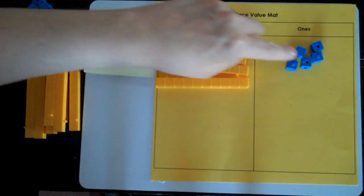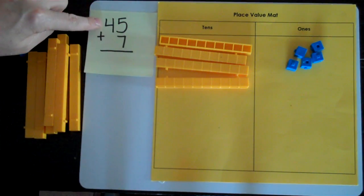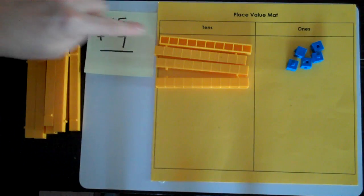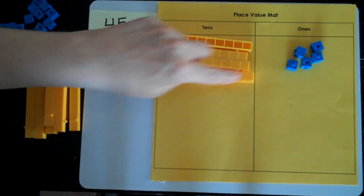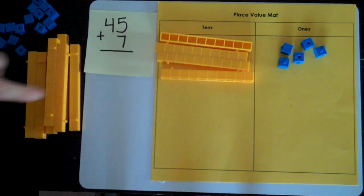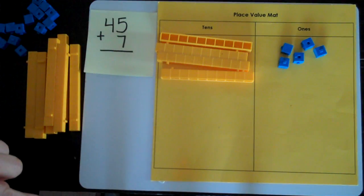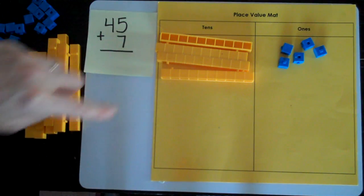And I want to have my number 45 be really clear that it goes together and I'm going to check that I've made it correctly. 10, 20, 30, 40, 41, 42, 43, 44, 45. It's a good idea to work with a partner and have them check. Sometimes we do things quickly and we miss something.